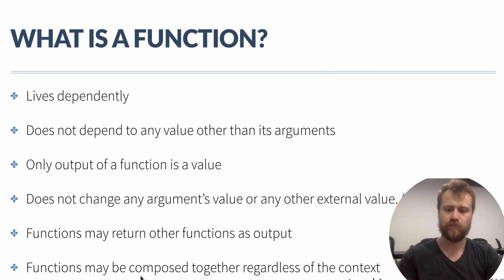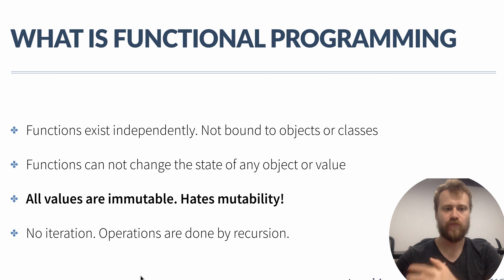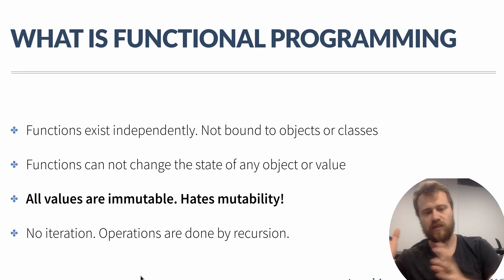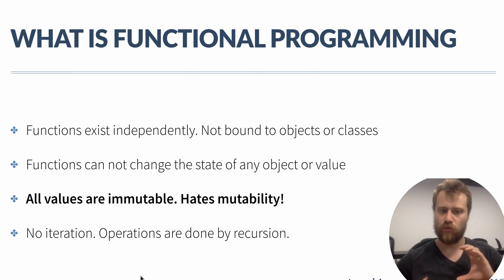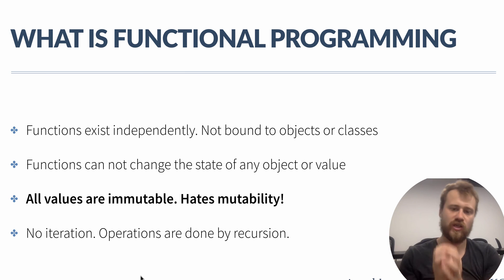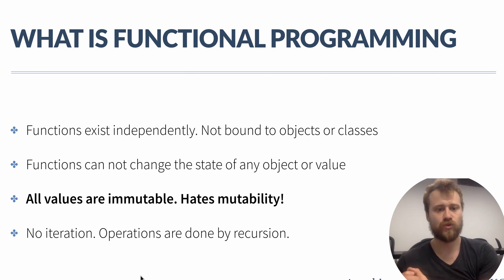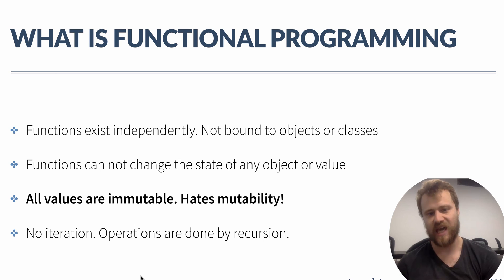Wherever you define a function, you may chain them to construct a bigger function. But in object-oriented programming you cannot refer to functions independently, so you cannot compose them. Functional programming is based upon pure functions: they exist independently, are not bound to object instances or classes, and cannot change the values of any object. They may only copy an object, modify the copy, and return it — that's why all values are immutable, and functional programming hates mutability.